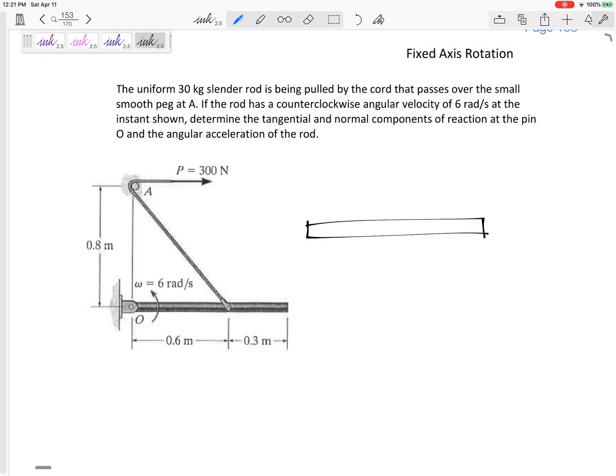So what forces do I have on this rod before I forget? The weight 30 times 9.81. I've got this 300 newtons. If it's 300 newtons here we can assume it's 300 newtons down here as well. At this instant it is at a 0.6, 0.8. You see that that's a 3, 4, 5. And what other forces do we have? The force of the pin.